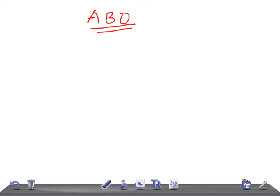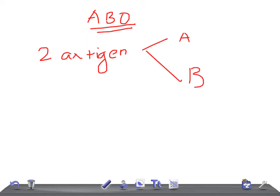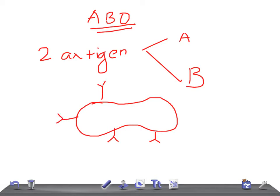Remember, there are four major blood groups determined by the presence or the absence of two antigens — one is A and another one is B. These two antigens are determined on the surface of what you call RBCs. If this is an RBC, either it has A or it has a B surface antigen on the surface of the RBC.